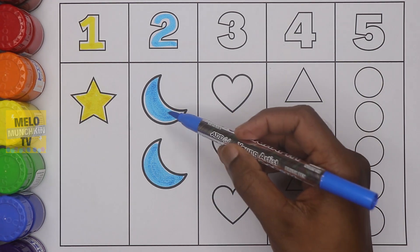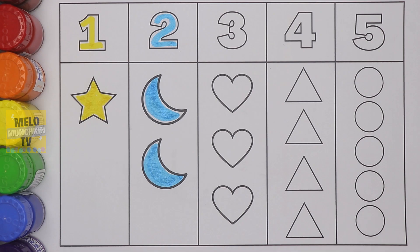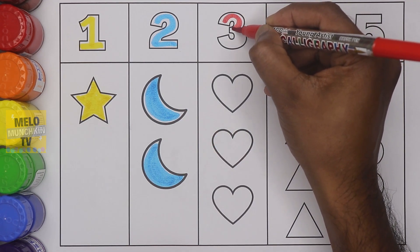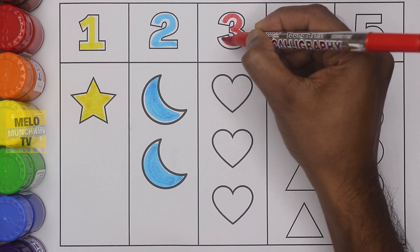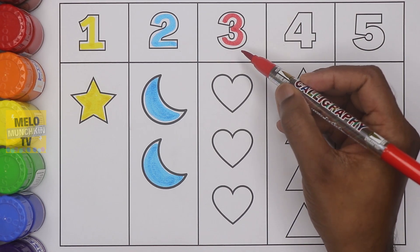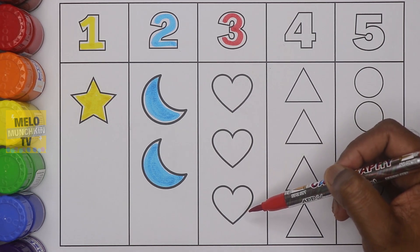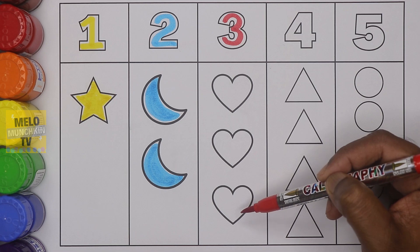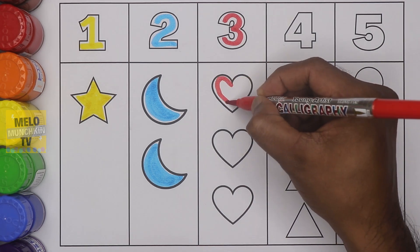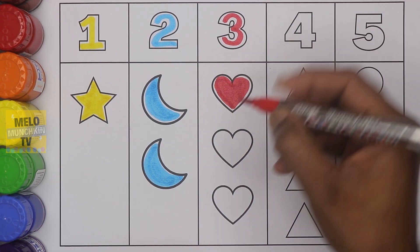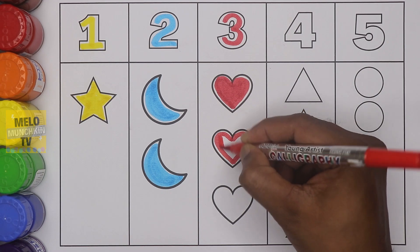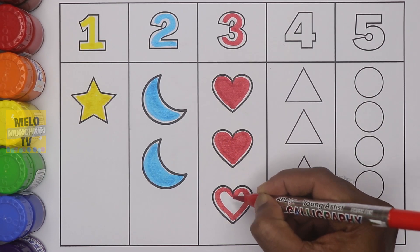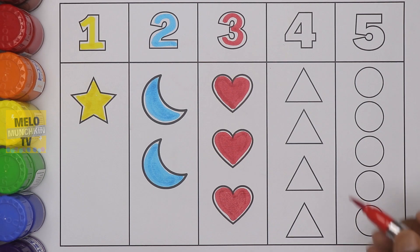One and two — two crescents! Next, I'll take red color and write number three — T H R E E, three. And these are three hearts. How many hearts? Three hearts — one, two, and three. Let's color these!